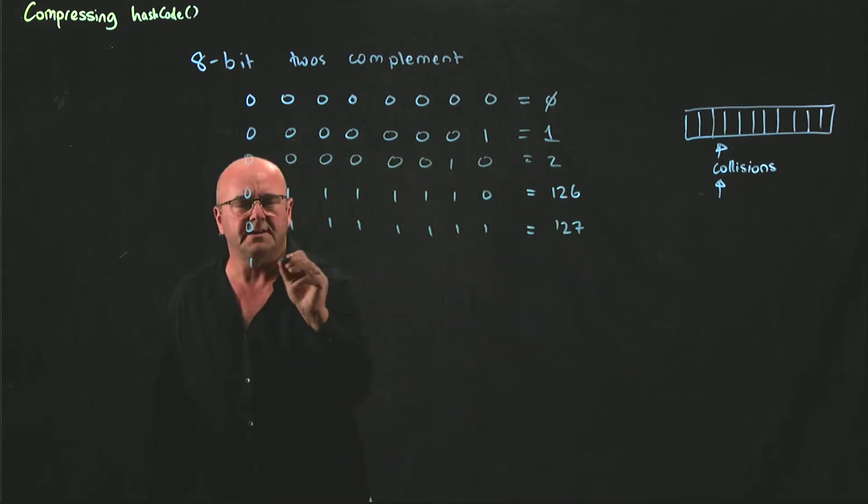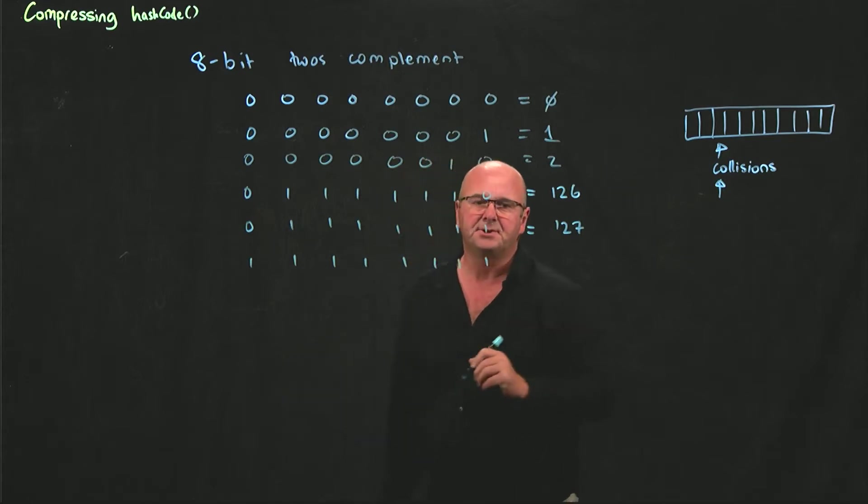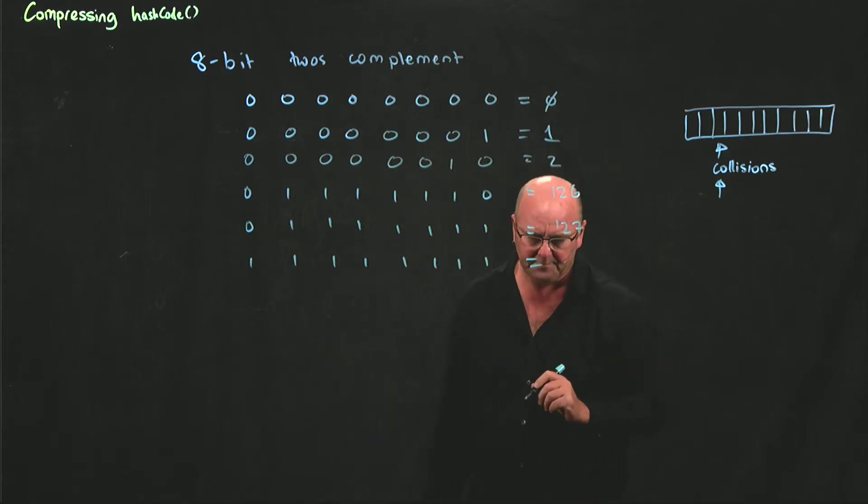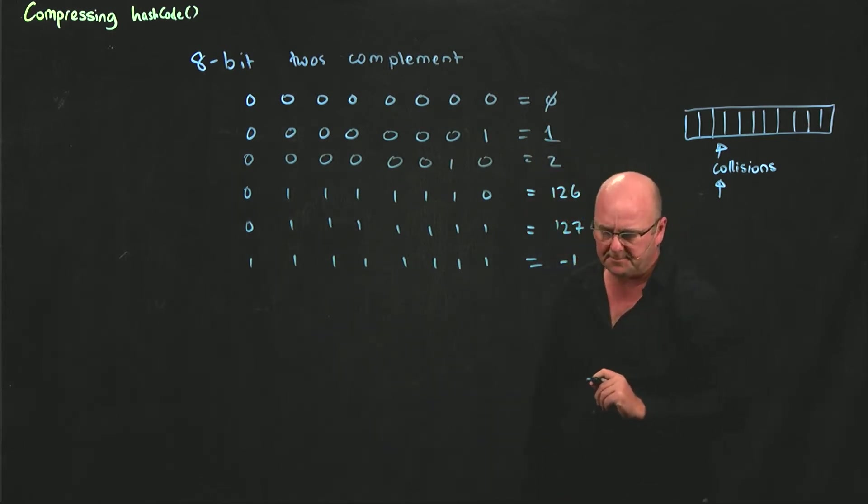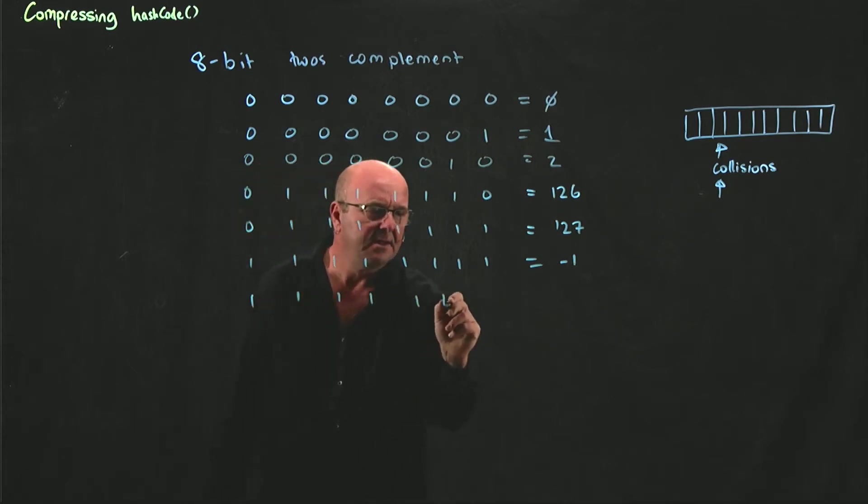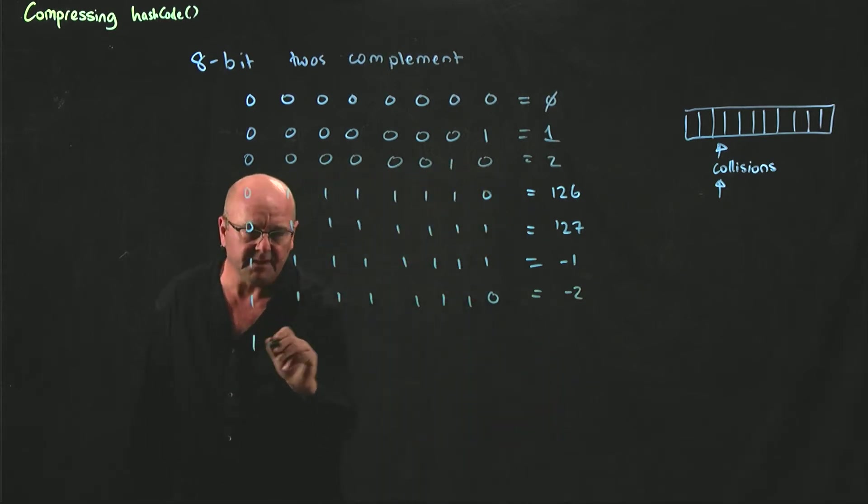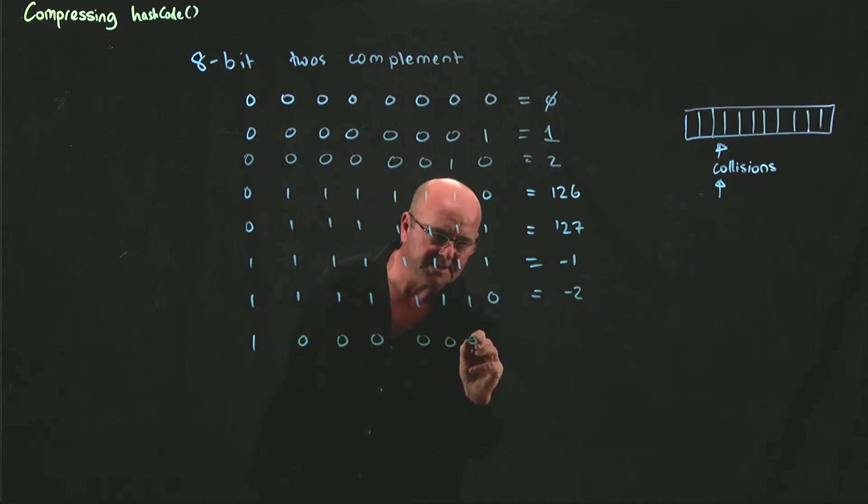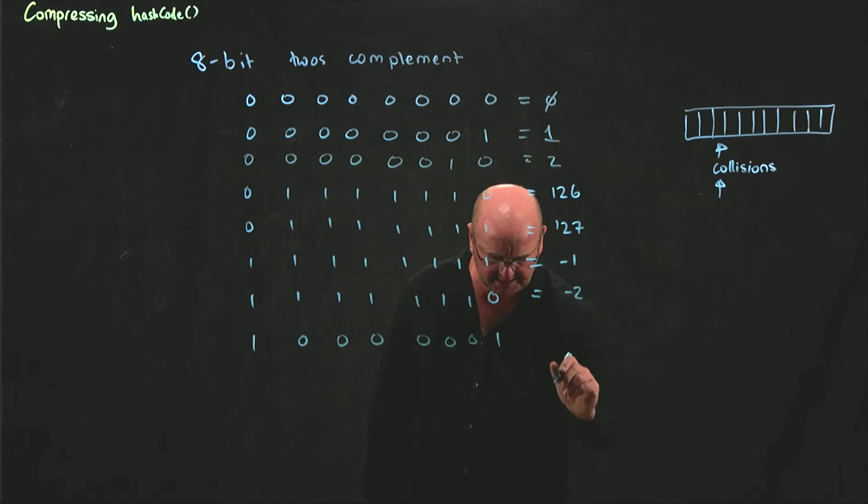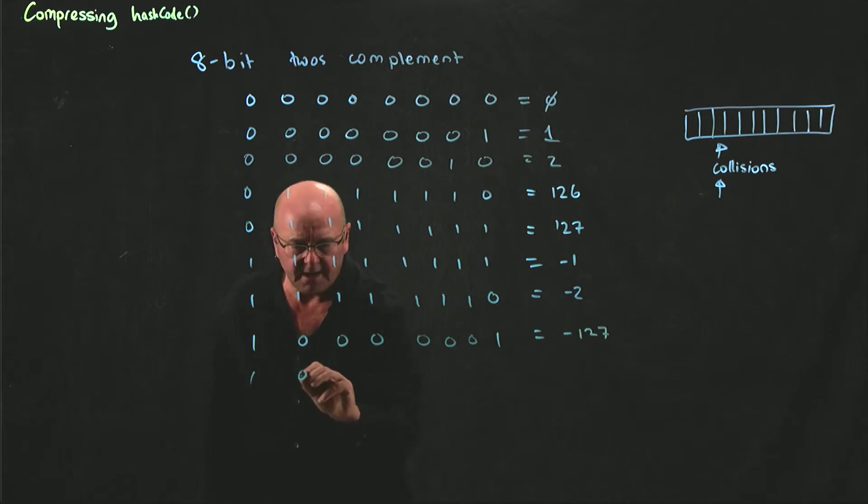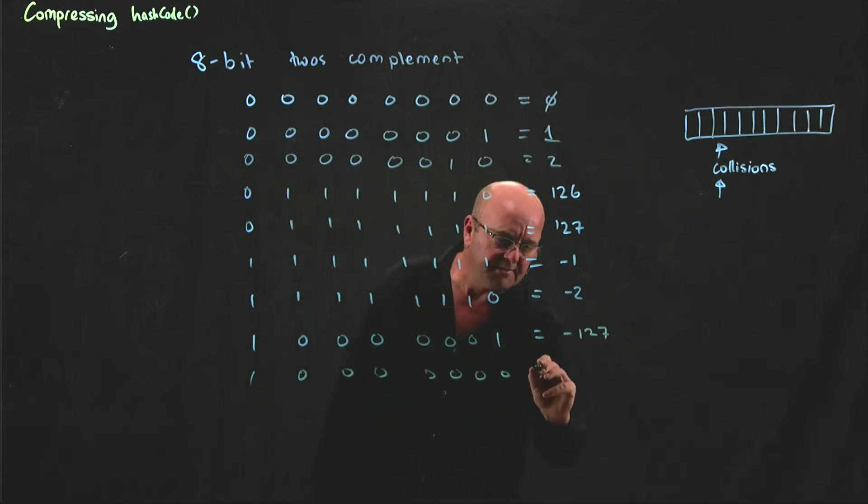So then, what's the number when every bit is true, when every bit is 1? It's not a large number, it's minus 1. And when all bits are true except the last, it's minus 2. And then when we come down to having all bits false except the first one and the last one, that's minus 127. And then when the first bit is true and everything else is false, that's minus 128.